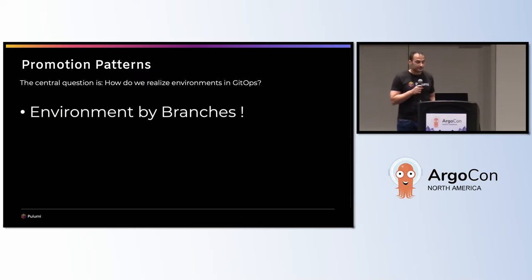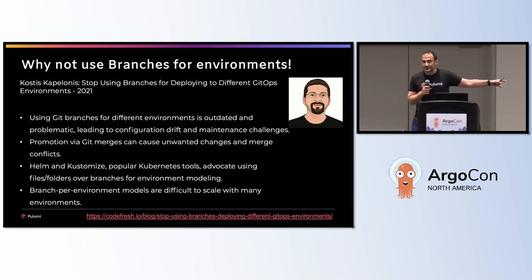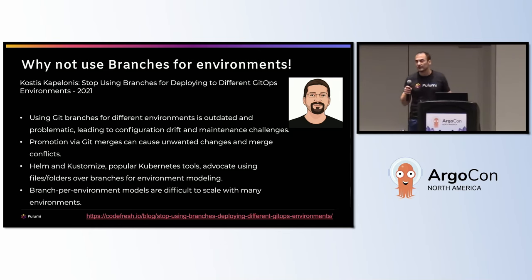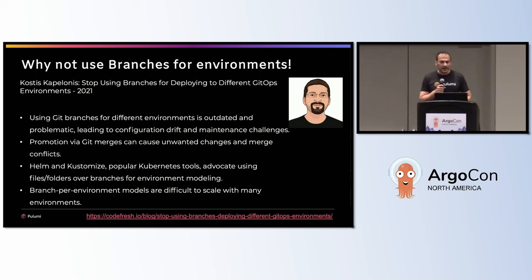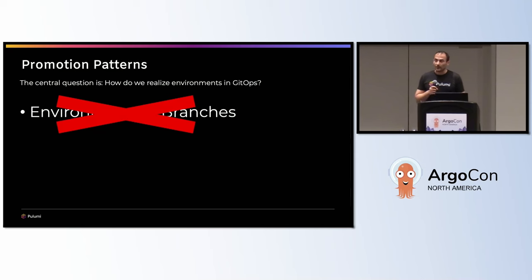Simple me was like: 'that's very easy, let's use environment by branches.' But that's not something you should do. A brilliant person in this space, Costis — and he's sitting here, so props to him — he created an article around this. He really says: don't use branches for your environment. That's maybe the most obvious approach, especially with a development background, but you run into a lot of problems. Promotion via Git merges and so on is a pain. There are also now tools that help us use a different approach with Helm and Kustomize — but the point is: environment by branches is a bad thing.